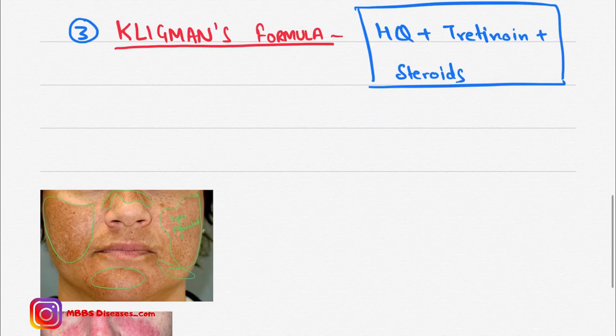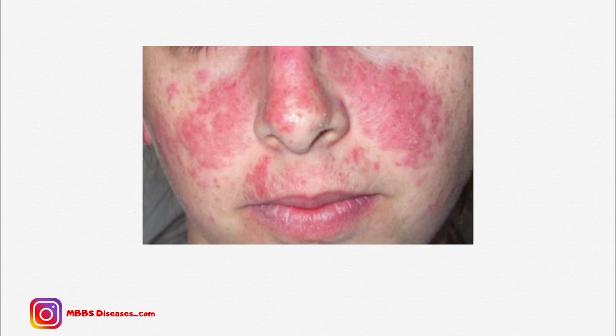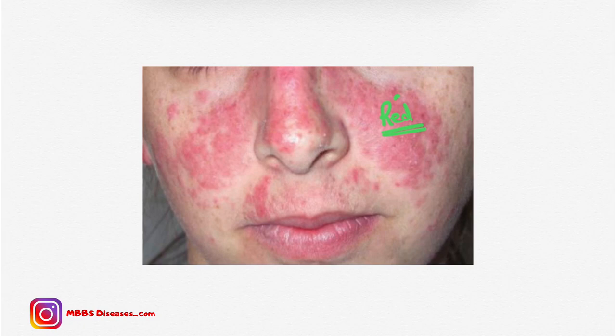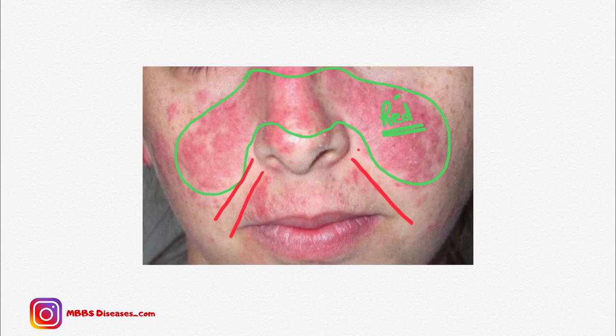Now I would like to show you another image. Look at this. Can you identify this? Is this melasma? No, this is not melasma. These are not hyperpigmented patches; these are red in color. You can see this butterfly shape. You can also see here that the nasolabial folds are not involved in this type of lesion. These are red, the nasolabial folds are not involved, and this is of butterfly shape. This is the difference between SLE rash and melasma.